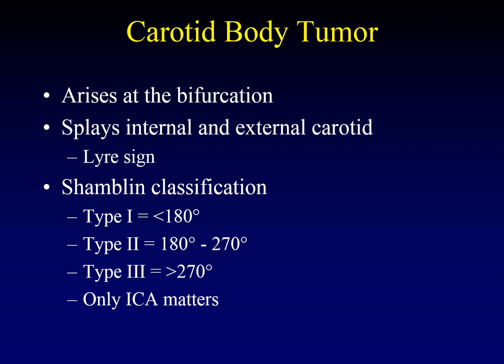The carotid body tumor is the most common site of paraganglioma in the head and neck. Carotid body tumors arise from the carotid body at the bifurcation of the common carotid artery. They classically splay the internal and external carotid arteries away from one another. This appearance on angiography or on a reformatted CT angiogram is called the lyre sign, named after the medieval stringed instrument. Carotid body tumors are classified surgically to describe how difficult the surgery is likely to be and how much blood loss to expect, and there is a radiologic corollary to that surgical classification.